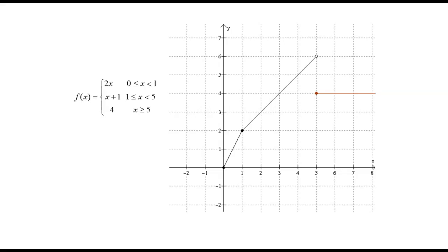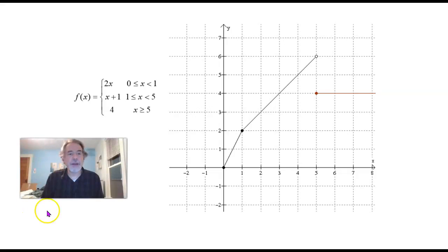Now here's an example of a graph of a piecewise defined function. This function takes whatever you give it and gives you either 2 times that number if that number is between 0 and 1, that number plus 1 if the number is between 1 and 5, and it just gives you 4 if the number you put in is greater than or equal to 5. Notice it didn't say anything at all about what happens if the number you put in is less than 0. So that would mean this function is undefined then. You're just not allowed to put in a number less than 0.